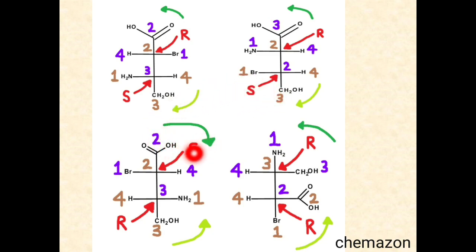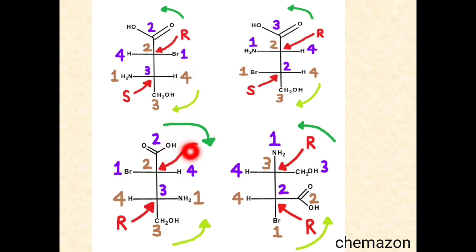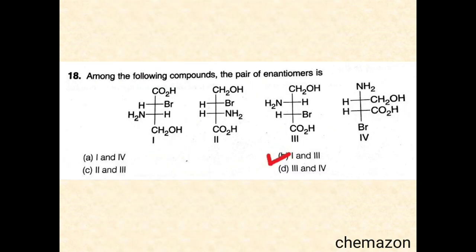For the third option we get 2S and 3R. Comparing the first option (2R, 3S) and the third option (2S, 3R), you can see the absolute configurations at carbons 2 and 3 are reversed — these two are a pair of enantiomers. The answer is molecule 1 and molecule 3. The fourth option gives 2R and 3R, which is not correct. So the correct answer is option B — the first and third molecules are a pair of enantiomers.